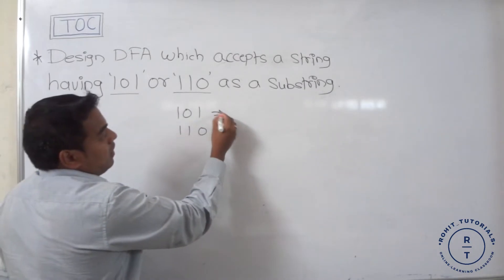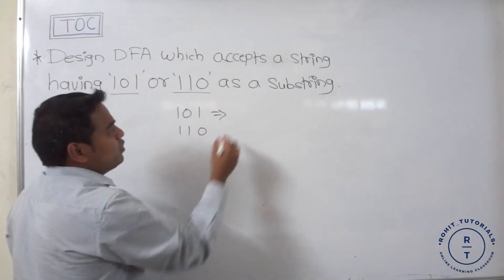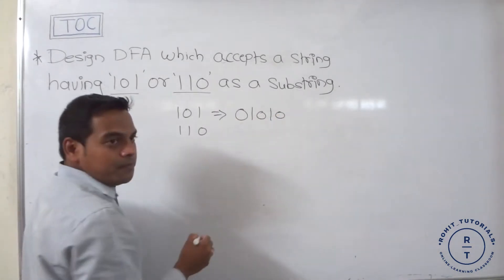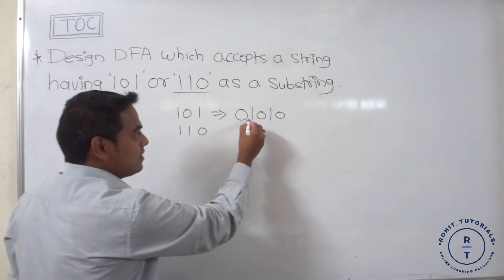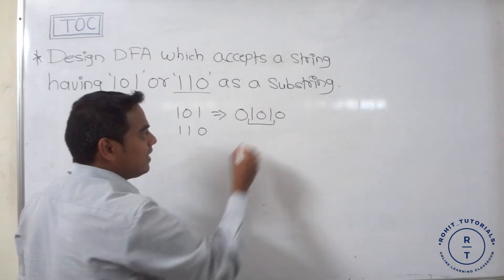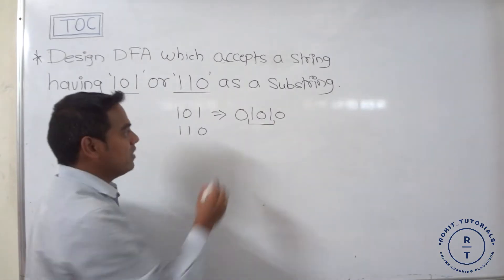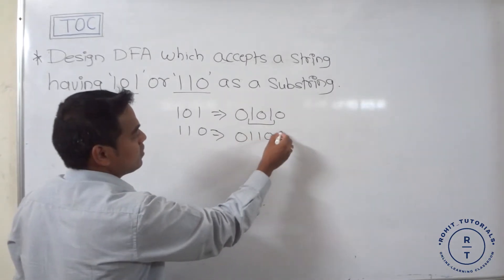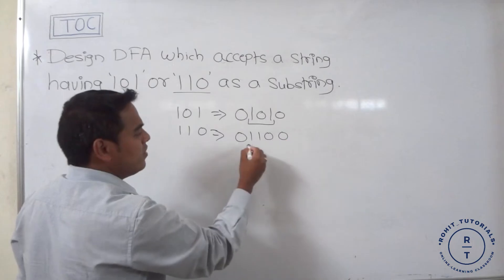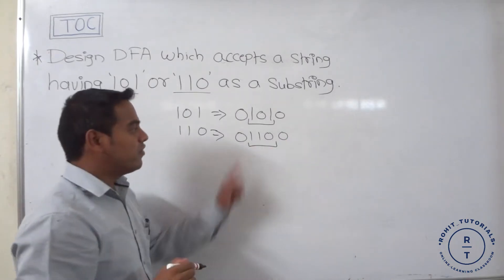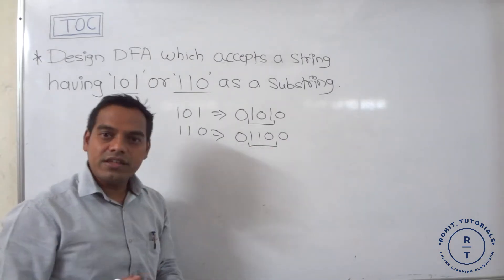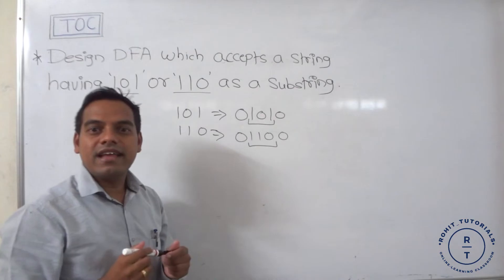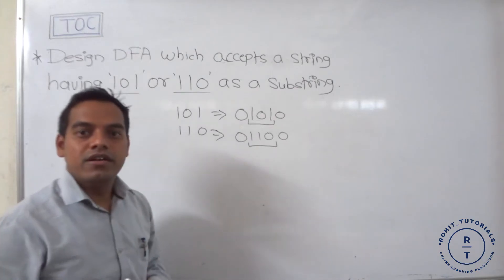For example, the string 01010 contains the substring 101. Or the string 01100 also contains 110 as a substring. So that string is accepted by the finite automata.